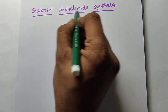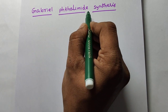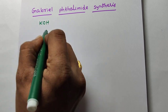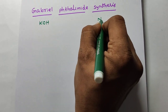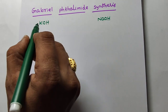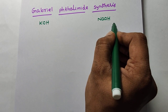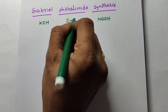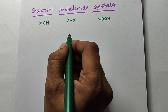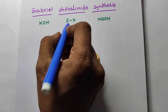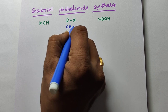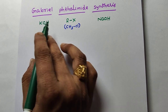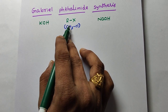Here Phthalimide is the reactant. Let us know what are the reagents. Reagents are very simple. First reagent is KOH — this is the base. Last reagent is also a base, that is NaOH. How do you remember? First reagent KOH, last reagent NaOH — both are bases. Second reagent is the middle one: primary alkyl halide, for example CH3Cl.